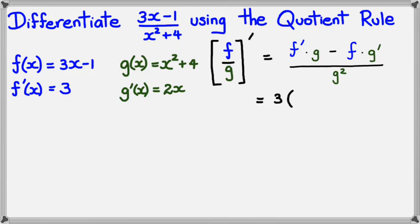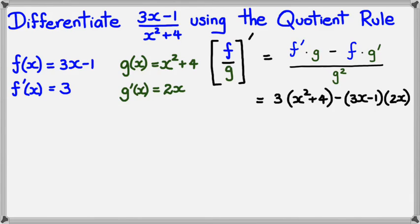f-dash is 3, multiplied by g which is x squared plus 4, minus f which is 3x minus 1, multiplied by g-dash which is 2x. That's all divided by g squared, so x squared plus 4, squared.